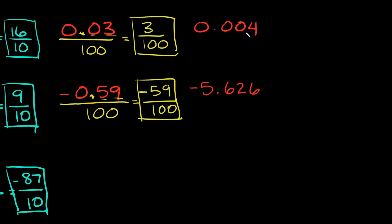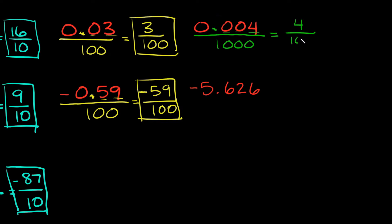Up here on the right we have 0.004. Again, draw a line underneath my whole number. This ends in the thousandths place, so I'll put a 1,000 on the bottom. Then just rewrite my answer — drop any leading zeros and the decimal point. So we're just going to have 4 on top and 1,000 on the bottom. Your answer here would be 4 over 1,000.